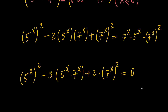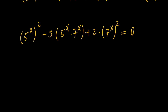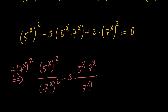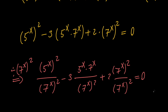As you look at this, this is a really nice homogeneous equation. In order to solve this, we divide both sides by (7 to the x) squared. We get (5 to the x) squared divided by (7 to the x) squared, minus 3 times 5 to the x times 7 to the x divided by (7 to the x) squared, plus 2 times (7 to the x) squared over (7 to the x) squared. We can simplify this into (5/7 to the x) squared minus 3 times (5/7 to the x) plus 2 equals 0.